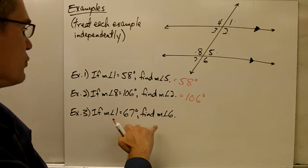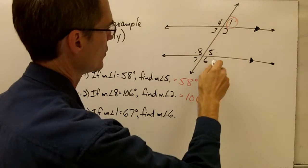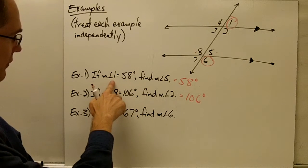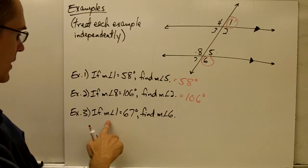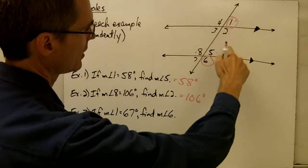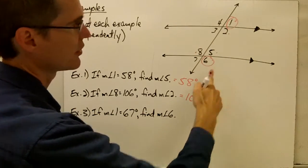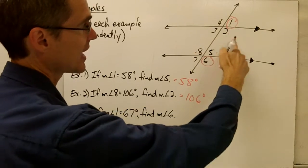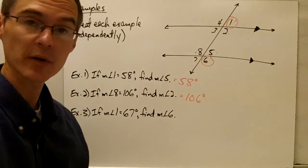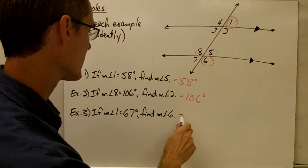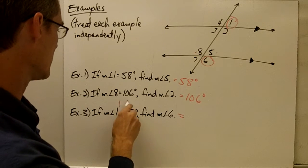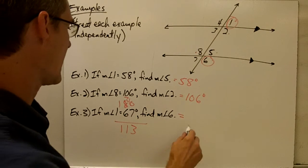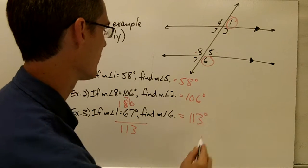Example three: the measure of angle 1 is 67 degrees — find the measure of angle 6. Treating this problem independently, here's angle 1 and here's angle 6. These are same side exterior angles. By the same side exterior angles conjecture, if two parallel lines are cut by a transversal, same side exterior angles are supplementary. So if angle 1 is 67 degrees, angle 6 must be supplementary to that: 180 minus 67 equals 113 degrees.